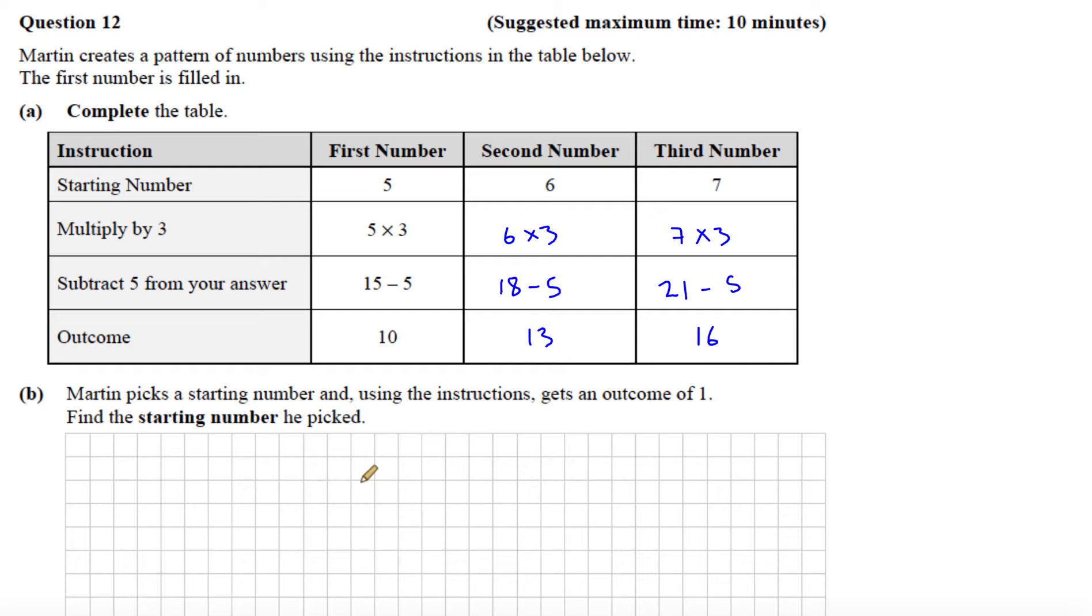Part B says Martin picks a starting number and using the instructions gets an outcome of 1. Find the starting number he picked. This time we know the outcome. We know the outcome is 1. We have to get back up here to the starting number.